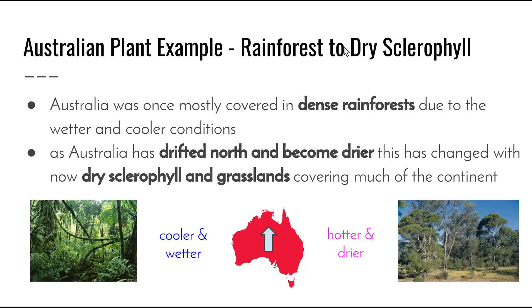An Australian example is the move from rainforest to dry sclerophyll. Changes in physical conditions can also lead to the evolution of Australian vegetation. In the past, Australia was much wetter and cooler, and these more temperate conditions led to most of Australia being covered by dense rainforests. As Australia has drifted north, it has become much warmer and drier, which does not suit this type of vegetation. As a result, the main vegetation types across most of the Australian continent are now dry sclerophyll or grassland, as these plants are much hardier and have developed adaptations over time to deal with less water availability.